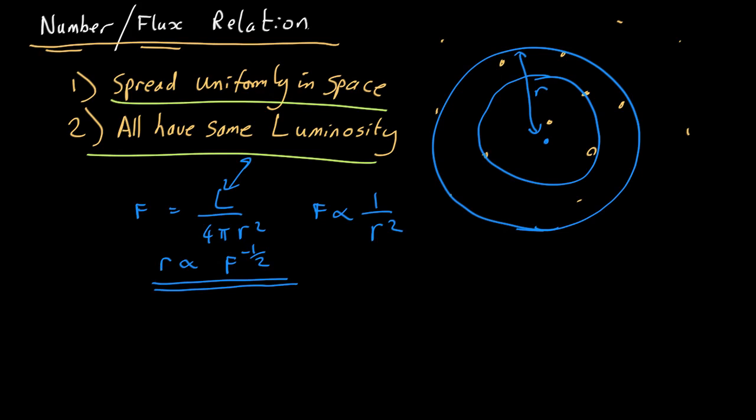Now let's look at the numbers we see. We're assuming the density is uniform everywhere. So the numbers we see is going to be proportional to the distance at which we can see them cubed, because it's a volume. The numbers are proportional to the volume that we are surveying.